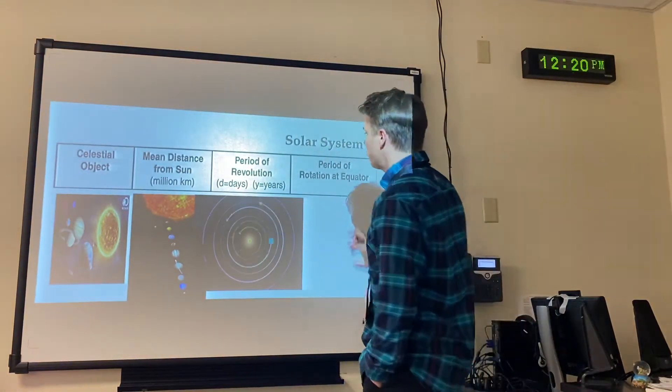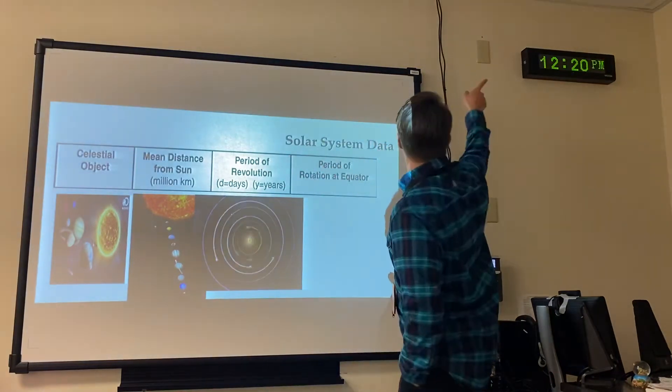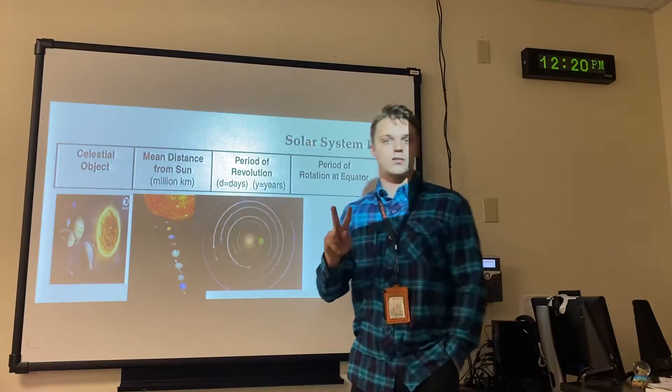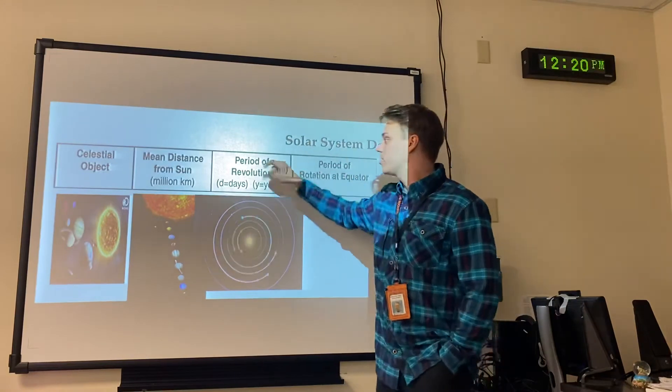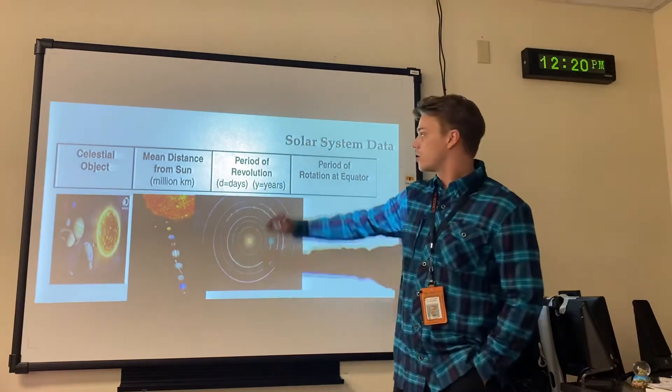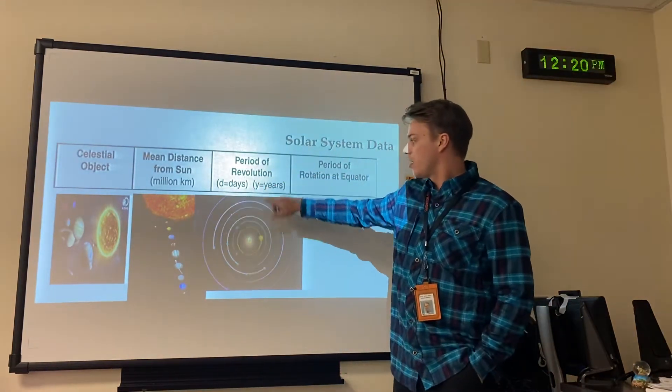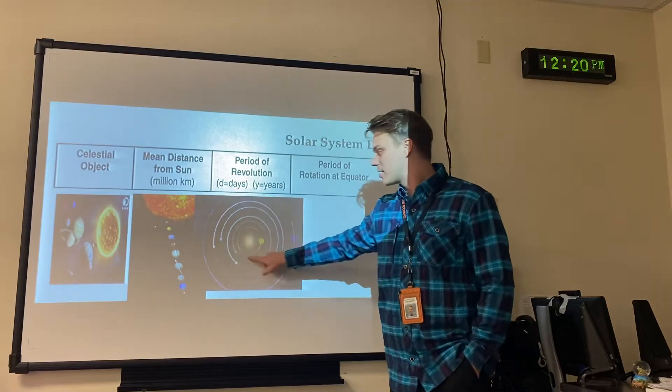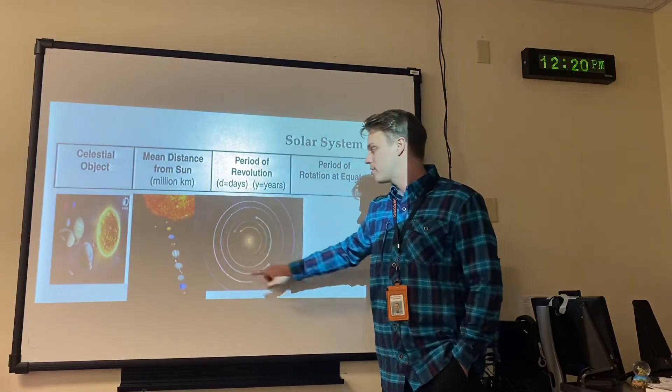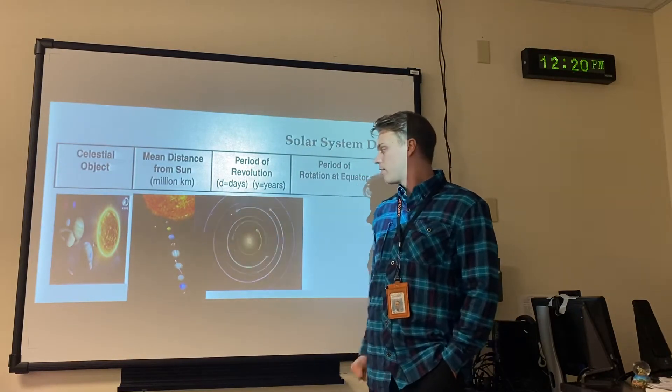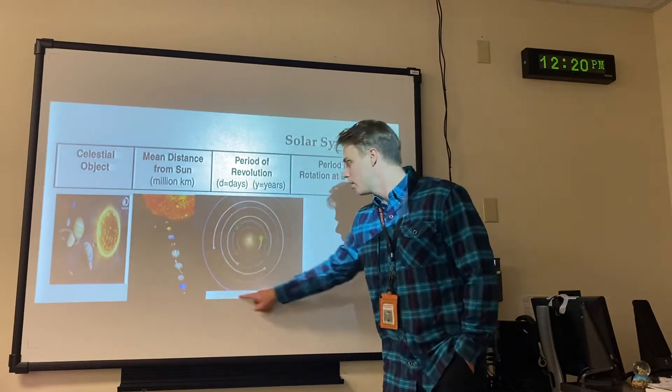Period of revolution. Period in school, our periods last 42 minutes, but a period is just an amount of time. So it's the time of a revolution. A revolution is to go around the Sun, so the amount of time it takes for an object to go around the Sun, the closer you are, the faster, the further you are, the slower.